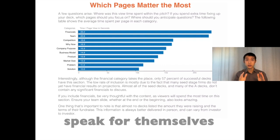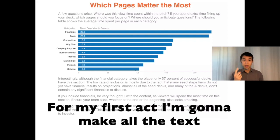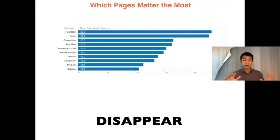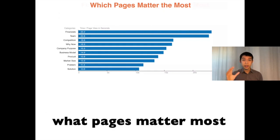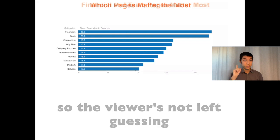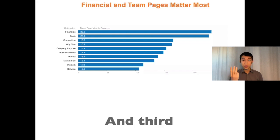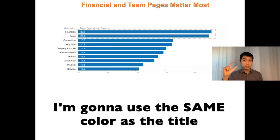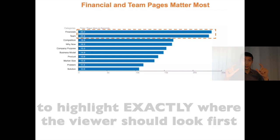Instead, let the visuals speak for themselves. For my first act, I'm going to make all the text disappear. Second, I'm going to make the title say exactly what pages matter most so the viewer's not left guessing. And third, I'm going to use the same color as the title to highlight exactly where the viewer should look first.